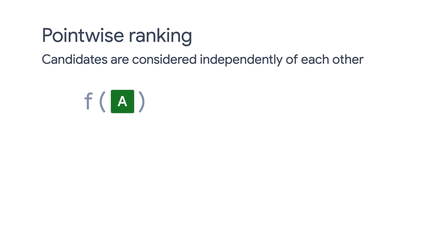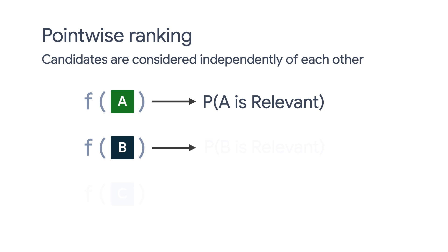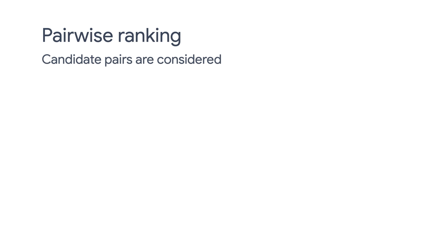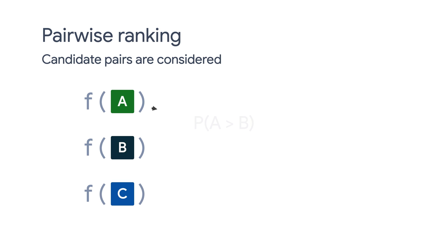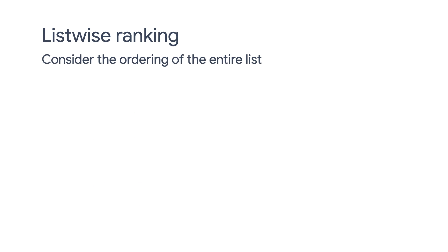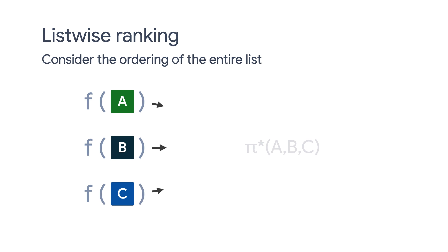There are multiple ways of ranking candidate items. In the case of Pointwise Ranking, candidates are considered individually and independently of each other — this is how we did our ranking in our previous ranking tutorial. In Pairwise Ranking, we consider each candidate pair and their relevance scores. Lastly, in Listwise Ranking, we consider the ordering of the entire list.